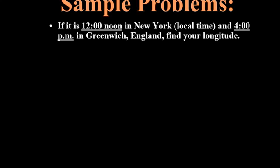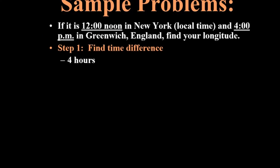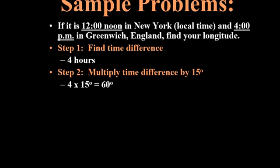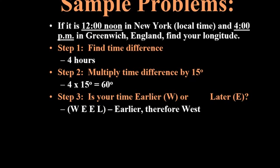Here's an example problem to determine your line of longitude. If it's noon in New York (local time) and it's 4 p.m. in Greenwich, England, what is your line of longitude? Step one: find the time difference. It's noon in New York and 4 p.m. in Greenwich, so the time difference is four hours. Step two: multiply the time difference by 15 degrees. Four hours times 15 degrees equals 60 degrees.